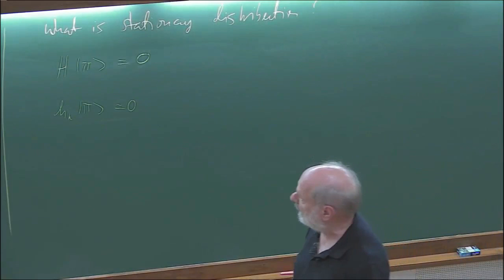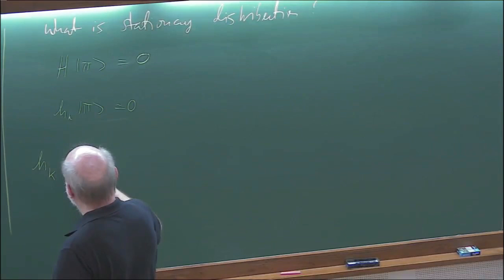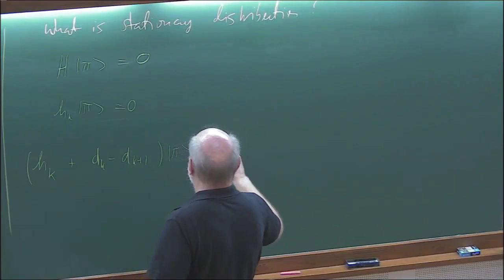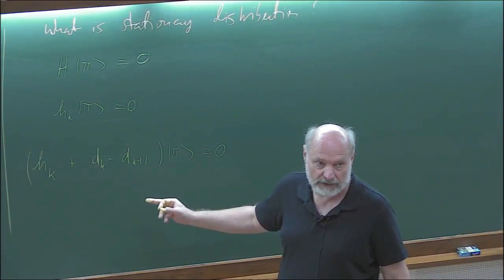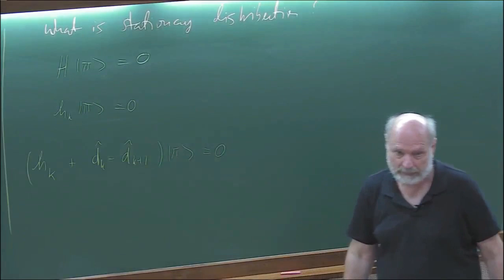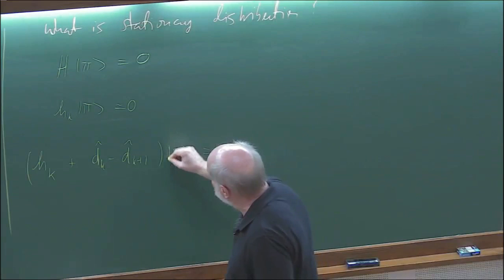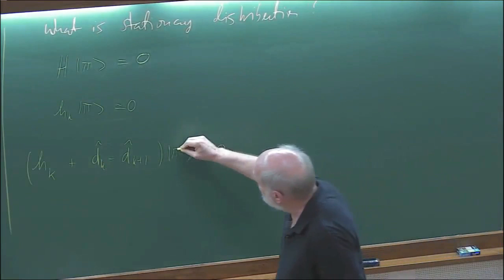However, what you can try is the following ansatz: look for something like H_K plus some diagonal matrix D_K minus D_{K+1} times pi = 0. If we sum over all K, by the telescoping property with periodic boundary conditions this diagonal term disappears. So this is just an ansatz; we have to determine the D's.